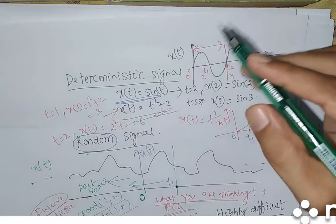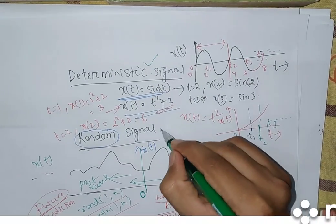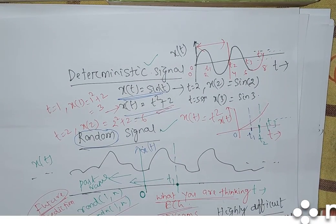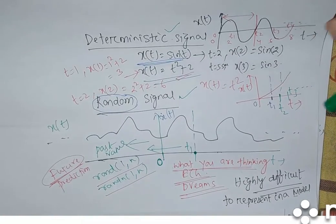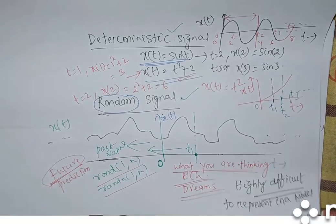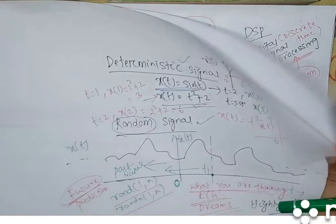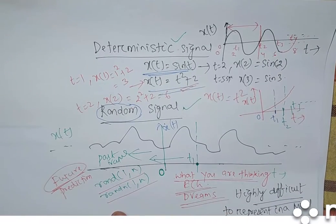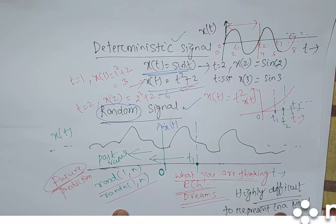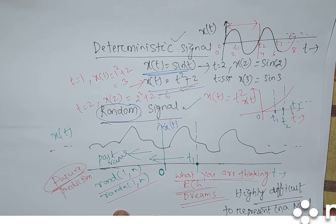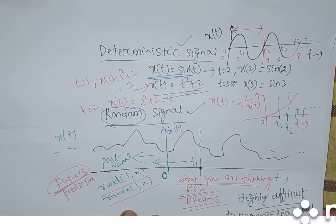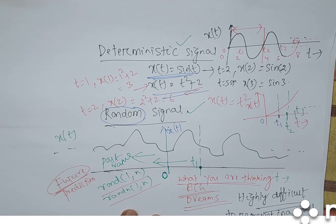Deterministic signal is something you can represent by a mathematical model, and random signal it is very difficult to represent by a mathematical model. And unfortunately, we are all dealing with random signals only, because you don't know what will happen in future — like COVID, who knows, it suddenly started and we were stuck in our homes. Maximum signals are random only, and we are really interested in random signals only.